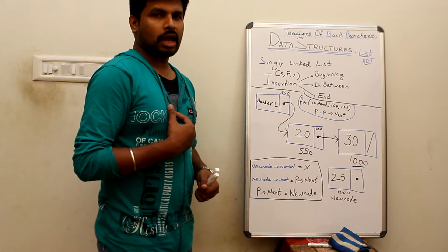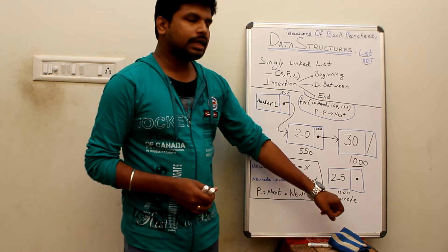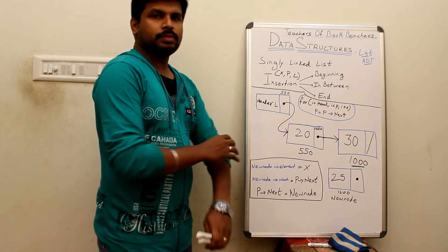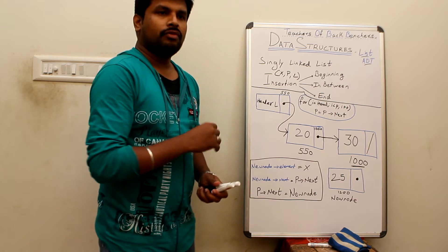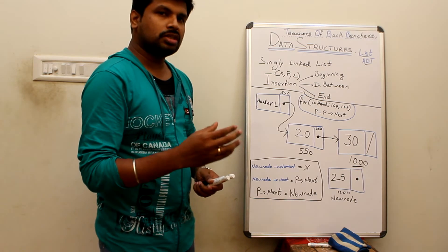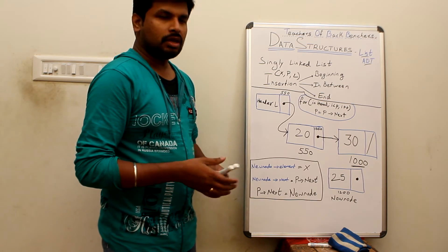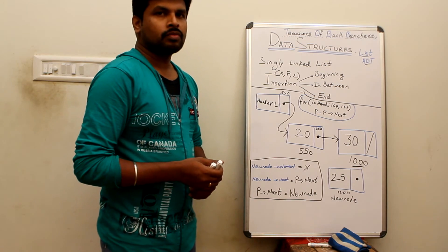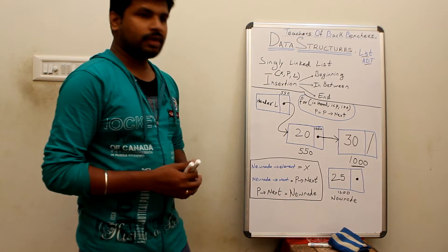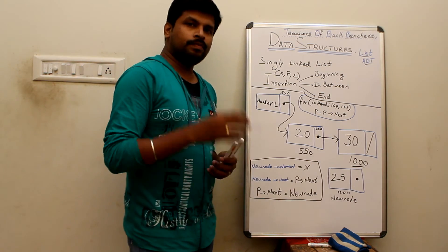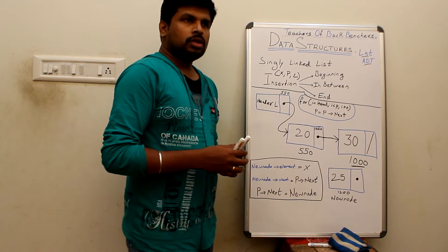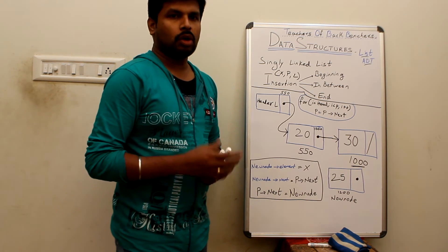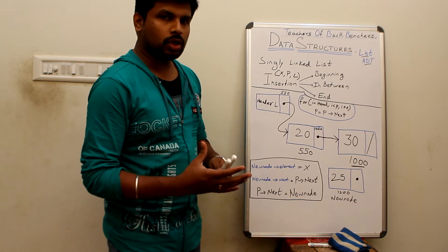Now suppose we want to add a new node to this list. First we have to create a new node. In programming, a node is created using a structure that consists of two segments: the value and the next address. After creating the structure, we create the node, and the value is obtained from the user.